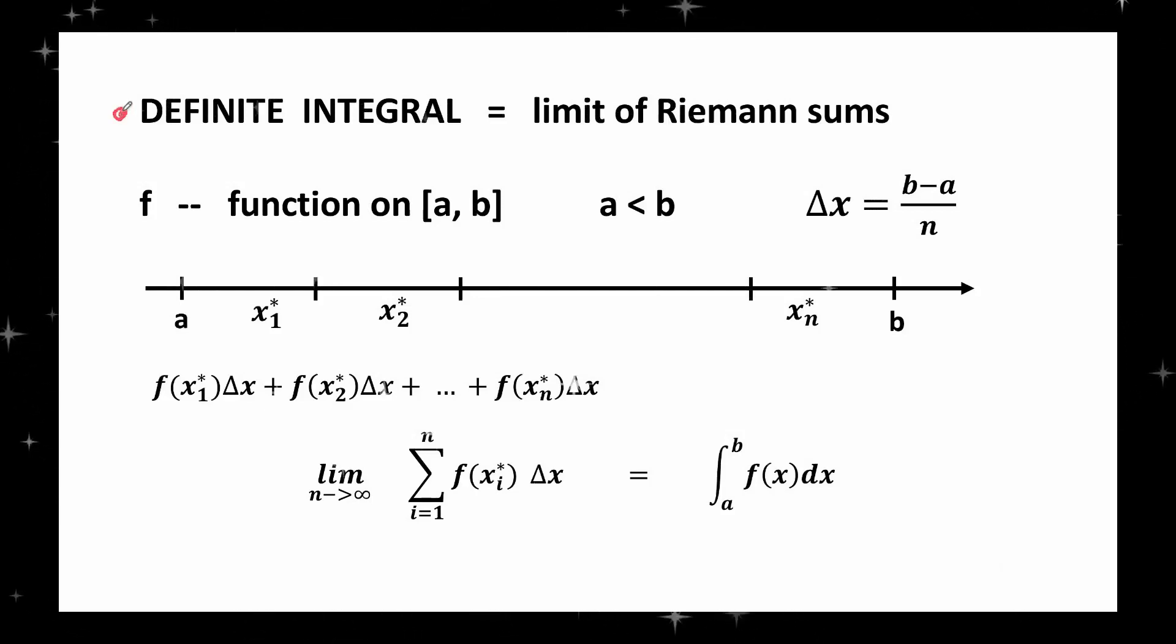Let's recall the construction of definite integral as the limit of Riemann sums. Let f be a function defined on a closed interval [a, b], where a is less than b. The interval [a, b] is the set of all real numbers that are greater than or equal to a and less than or equal to b.